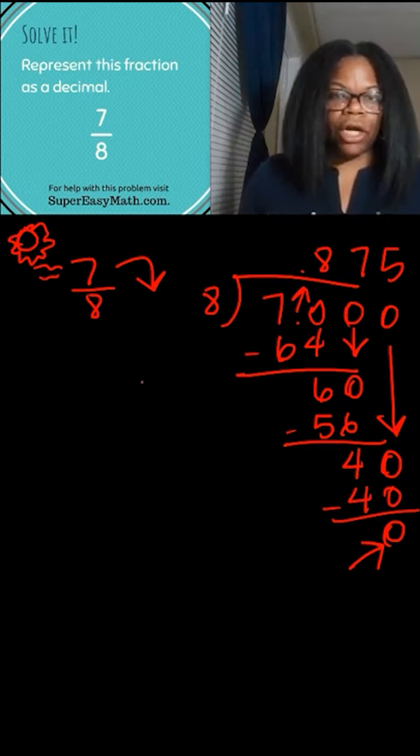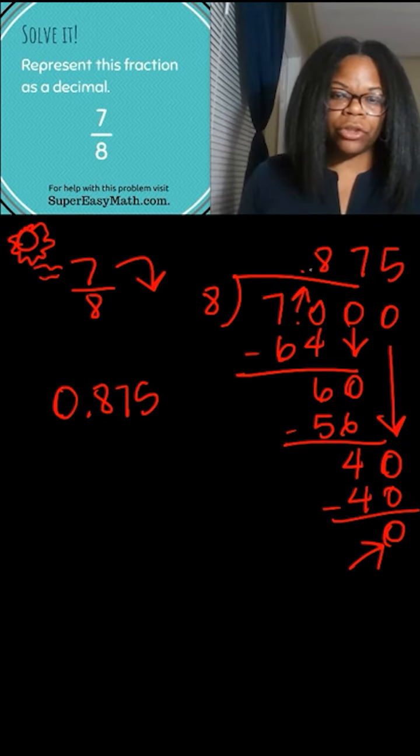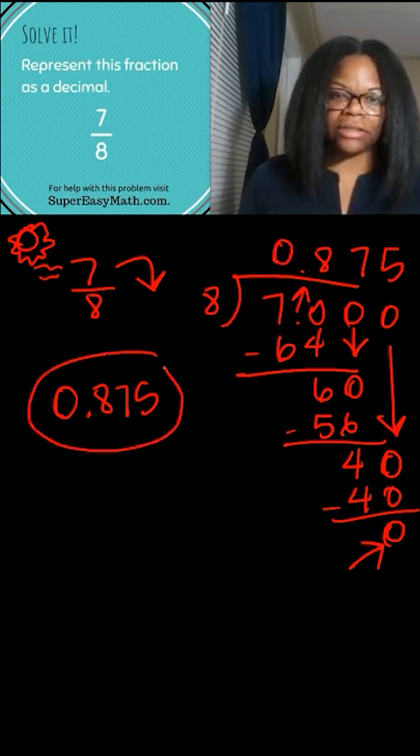So my answer of what is seven-eighths as a decimal: that would be 0.875. Whenever there's no number to the left of the decimal, you can always add a zero and it has the same value.